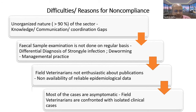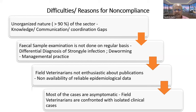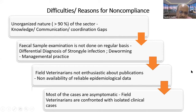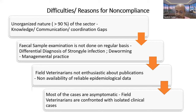Field veterinarians are not enthusiastic about publication — that is one more reason for non-compliance, as epidemiological data is not being constructed. They are doing fantastic work in the field confronting all adversities. They should publish — a small piece of information can make a big difference. Most cases are asymptomatic, so field veterinarians only confront symptomatic cases while all asymptomatic cases are tackled at the farmer level by ad hoc drenching of anthelmintic — which is the biggest problem driving anthelmintic resistance.